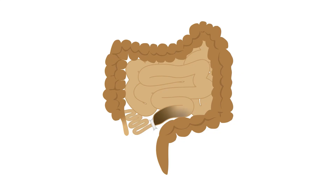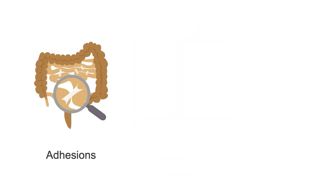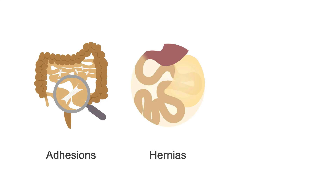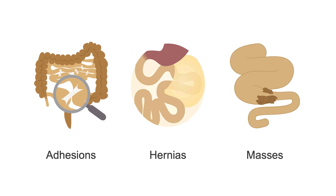Small bowel obstruction occurs when there is blockage of the small intestine, causing the bowel before the blockage to dilate. This can be caused by scar tissue in the abdomen called adhesions, hernias, which occur when the bowel passes into places that it should not be, or masses related to benign or cancerous tumors.